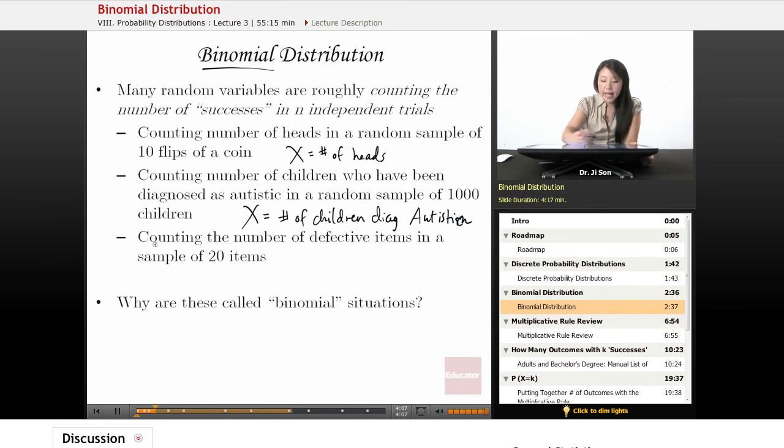Another example is counting the number of defective items in a sample of 20 items. Notice that when you think of the word defective, you don't really think of that as successes, but what we're doing is counting some outcome of interest for every N trials. In this case, N is 20, so X equals the number of defective items.